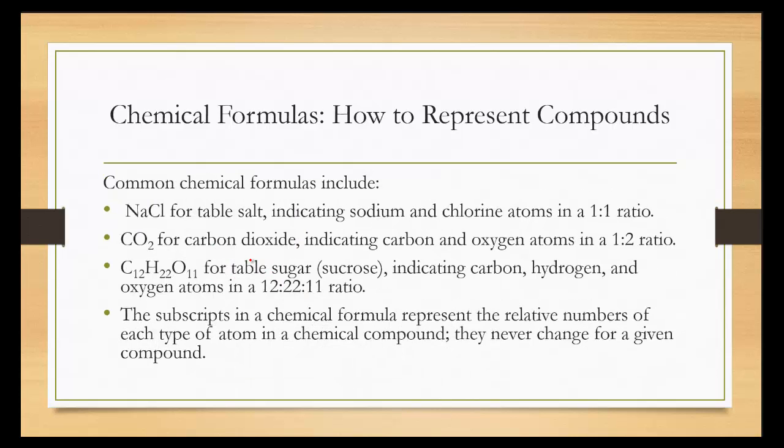Let's look at a few more. Common chemical formulas include sodium chloride, table salt. We have 1 Na and 1 Cl. It's a 1 to 1 ratio. Carbon dioxide. C for carbon. There's no 1 there, but it's assumed to be 1. Oxygen is O and 2, so it's a 1 to 2 ratio.